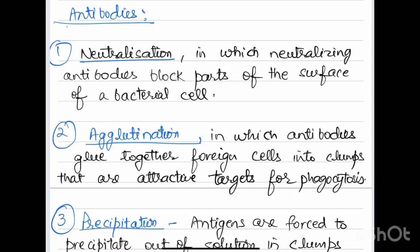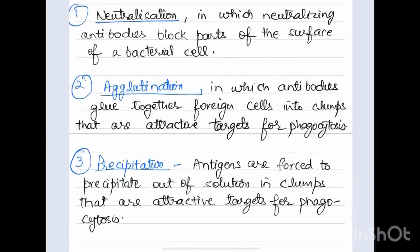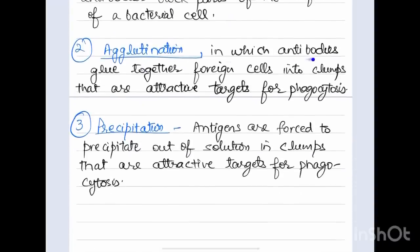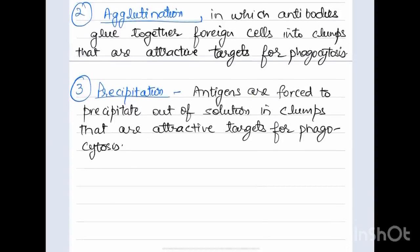The antibodies' functions include neutralization, in which neutralizing antibodies block parts of the surface of a bacterial cell; agglutination, in which antibodies glue together foreign cells into clumps that are attractive targets for phagocytosis; and the third function is precipitation, where antigens are forced to precipitate out of solution in clumps that are attractive targets for phagocytosis. That is eating up of cells. Thanks for watching, stay tuned, subscribe to my channel.